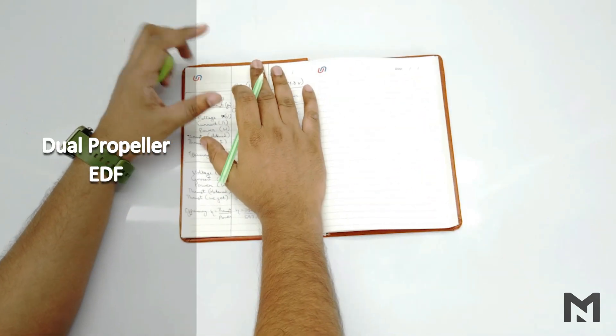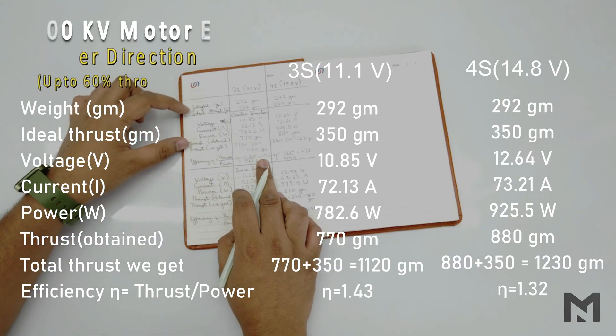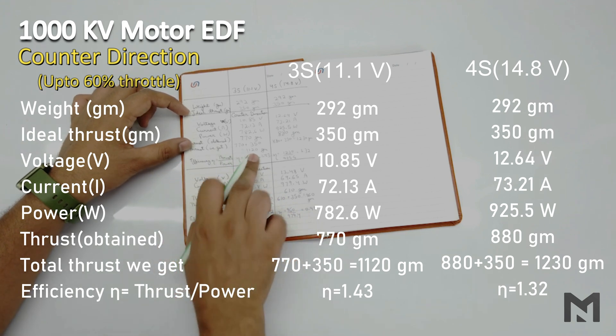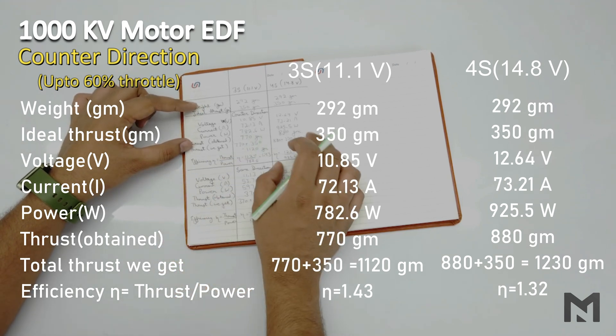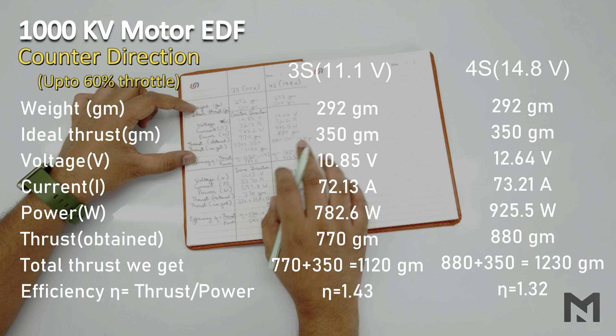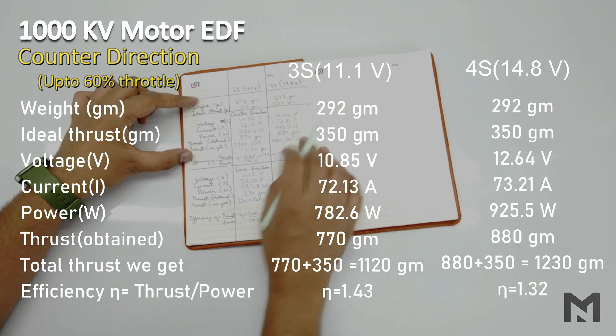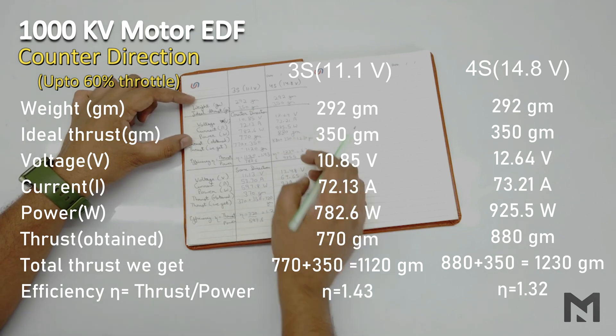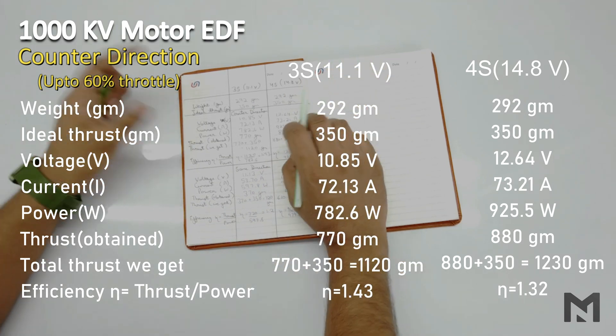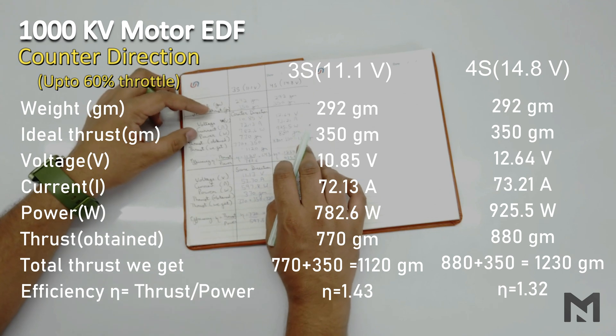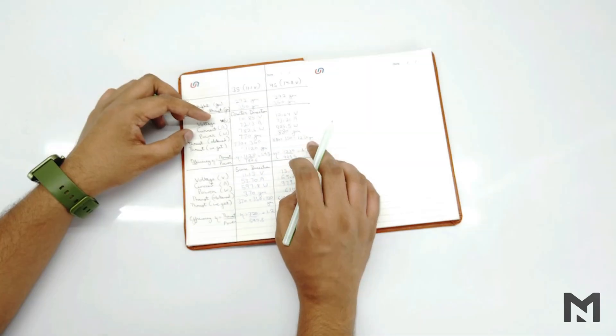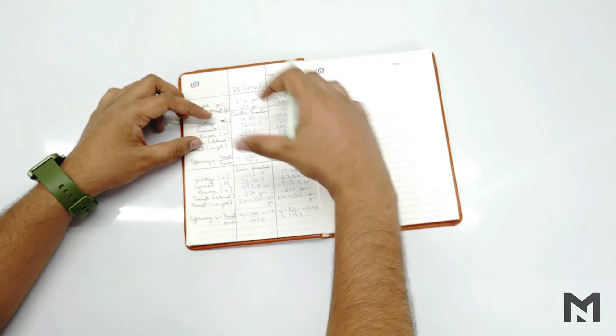Now we will come to dual propeller configuration. For counter direction EDF, we get a thrust of 1120 grams at 1.43 efficiency using a 3S battery. And it gives a thrust of 1230 grams at 1.32 efficiency using a 4S battery. Though the thrust is less using two motors, it has a high mass flow rate. So you can use it in any application where there is a requirement of high mass flow rate.